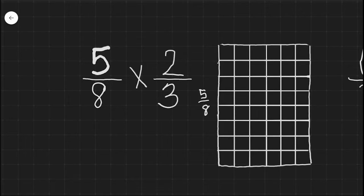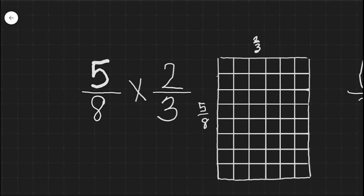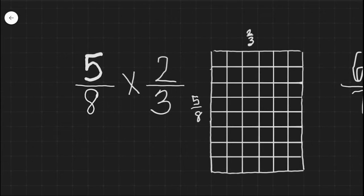Five-eighths will show up on this side with two-thirds on this side. So first off I need to fill in five-eighths. What I'm going to do is I'm going to take and I'm going to go one...